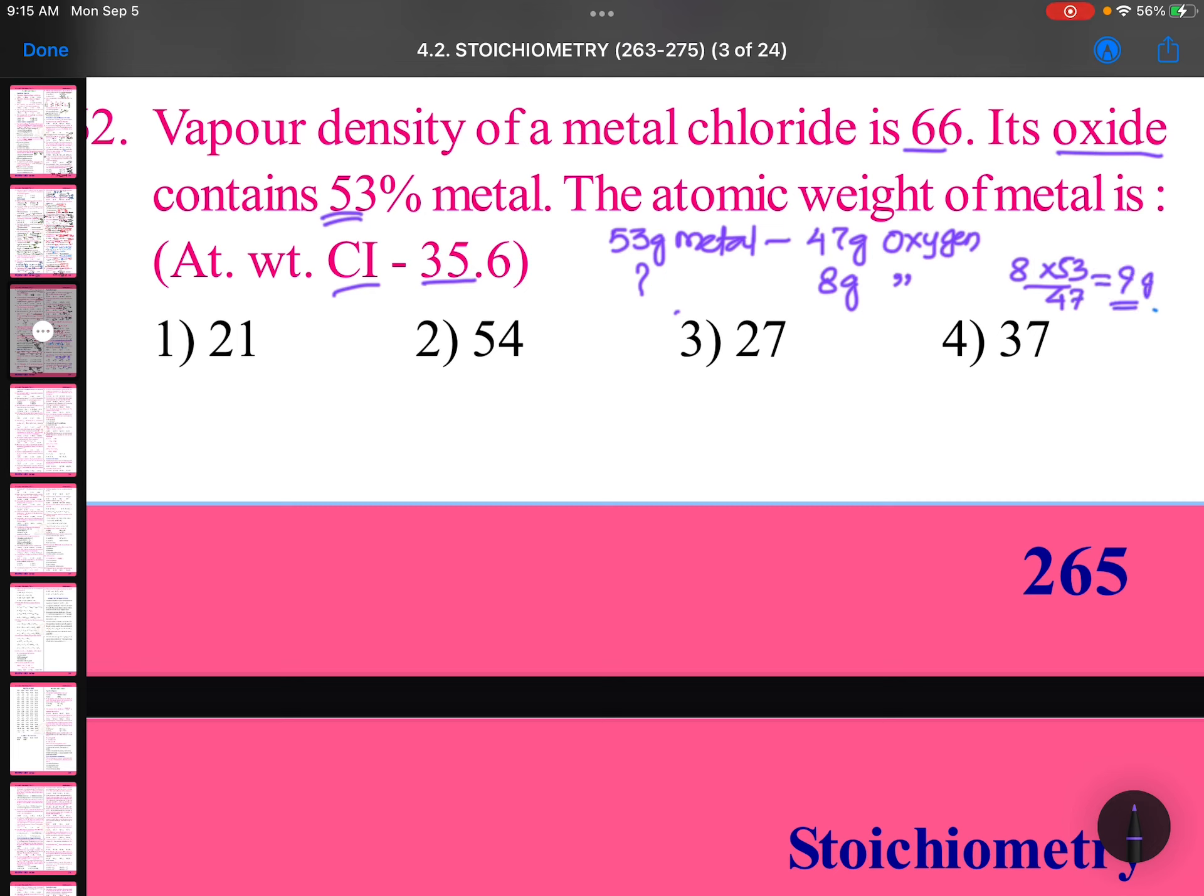So 9 is the equivalent mass of the metal. When 9 is the equivalent mass of the metal, then what do we need to do? We could check the 9 table—either 27 or 54 will come—but that's not the complete way we need to do it.